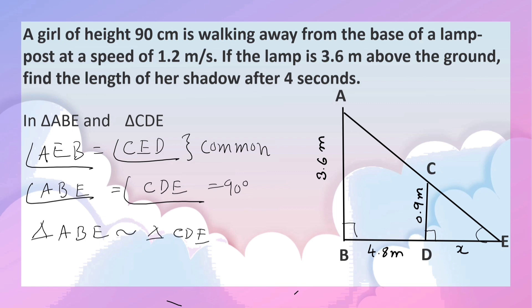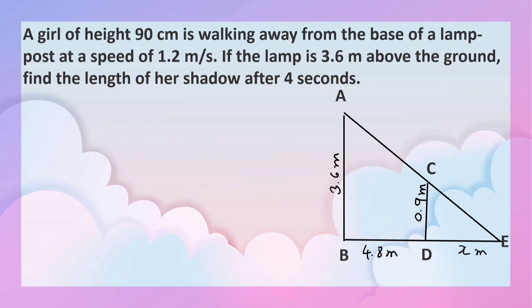If two triangles are similar, then their corresponding sides are in proportion. So now let us write AB by CD equals BE by DE. Why? In similar triangles, corresponding sides are in proportion.